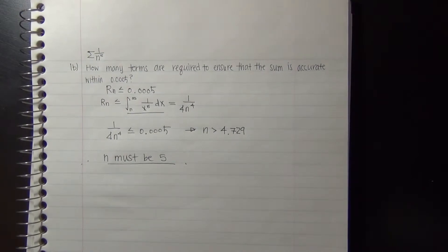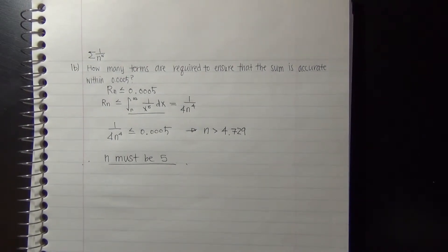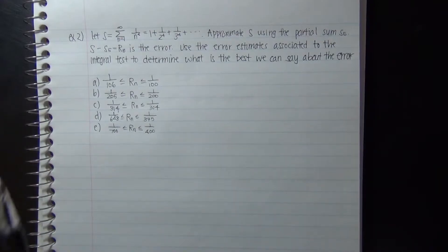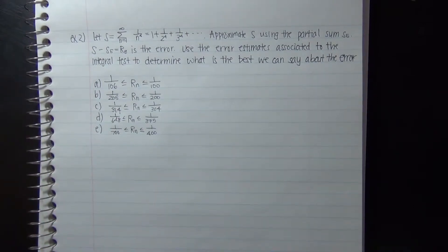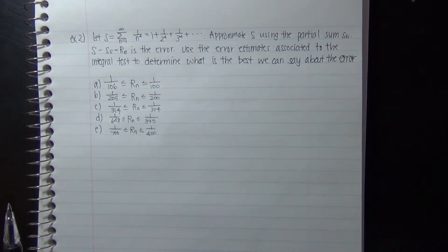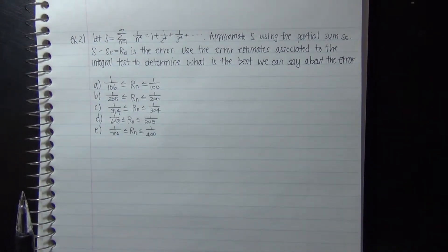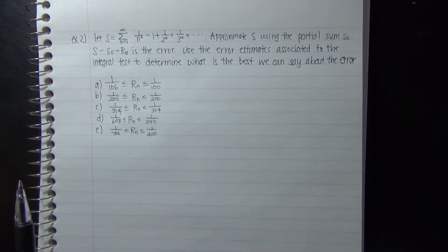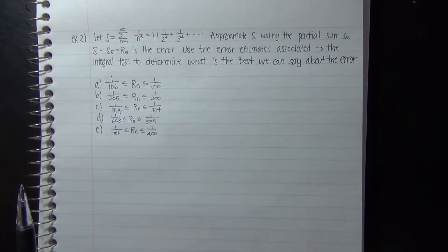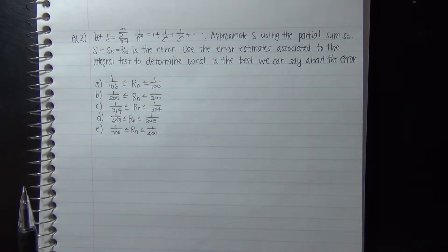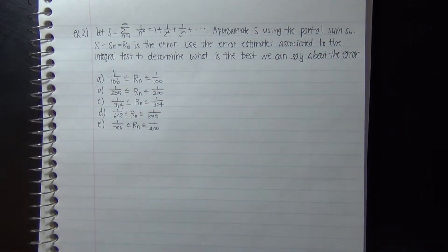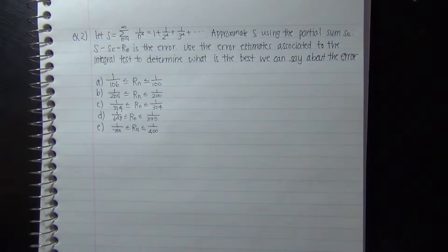Remember that this is the most common type of question asked on the integral test error. We'll continue to solve some more questions. Let s equal the series of 1/n^4, and approximate s using the partial sum S5. We'll use the error estimates associated with the integral test to determine the best we can say about the error.